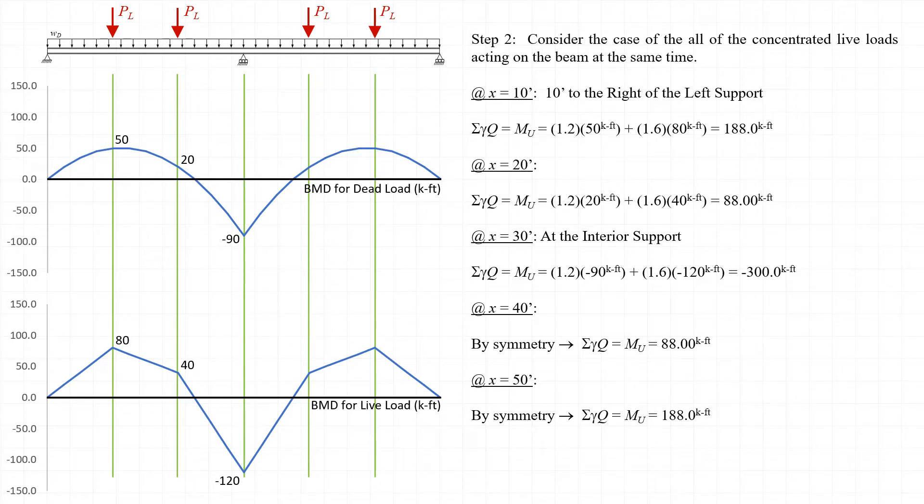Similarly, at the location of the interior support at x equals 30 feet, we can see that we have a factored moment Mu equal to negative 300 kip-feet. Without any further analysis, we could design our beam for a positive moment of 188 kip-feet and a negative moment of 300 kip-feet.